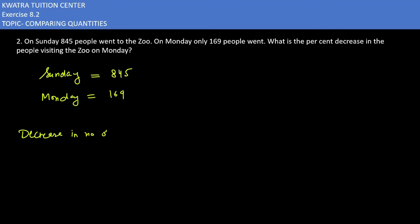The decrease in number of people would be equal to 845 minus 169. And if you calculate 845 minus 169, you will get 676.